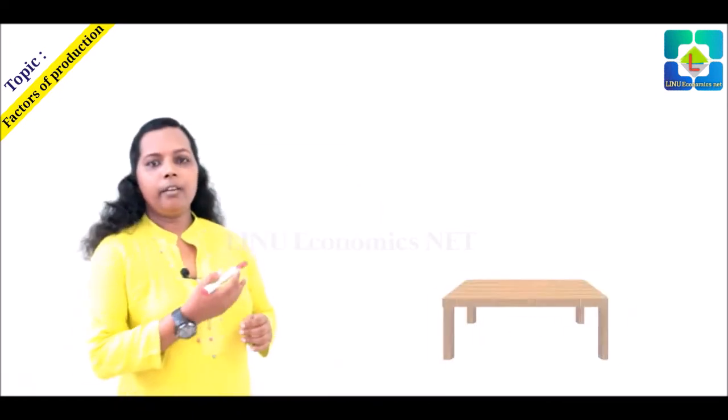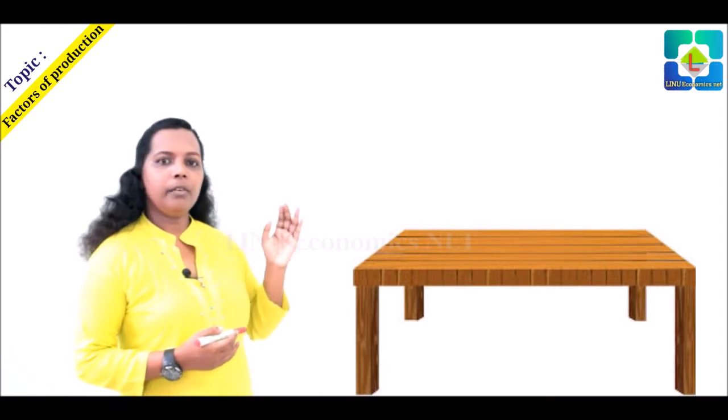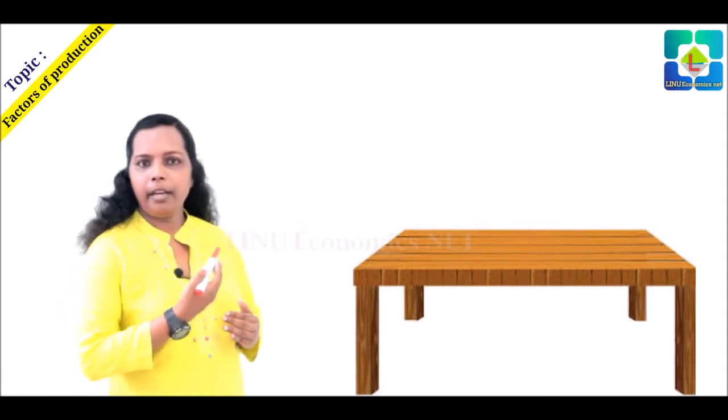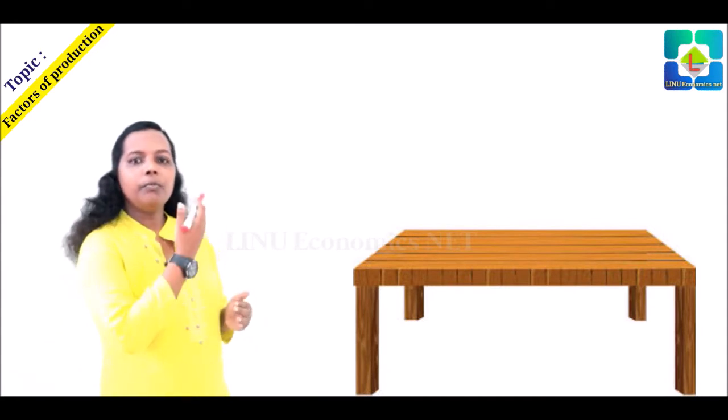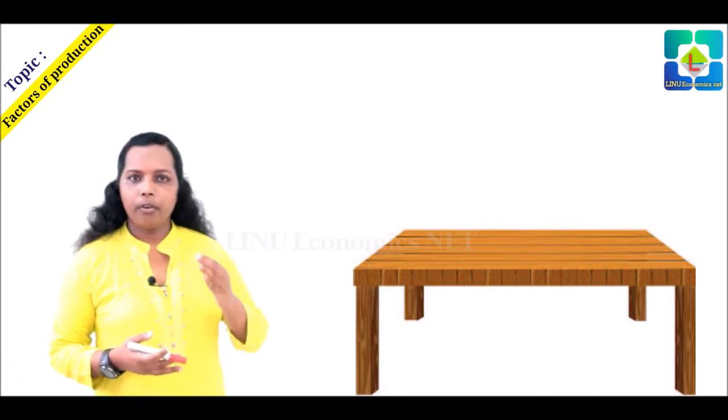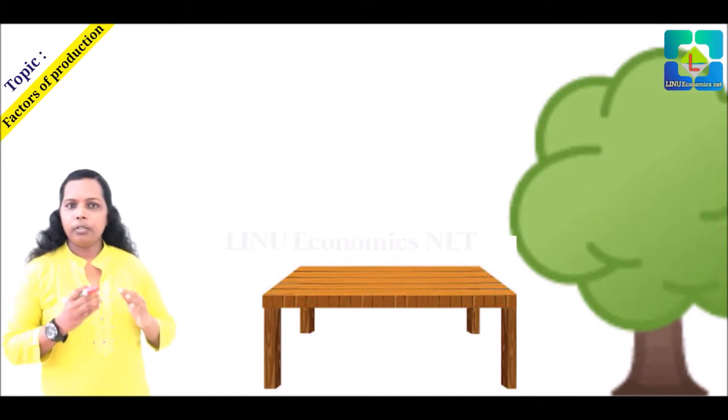We can see different types of goods and services around us. For example, in our house we can see televisions, fridge, tables, chairs. Let's take one example. Here is a wooden table. How is this wooden table made? We know that this wooden table is made up of wood. How can we get wood? Of course, it is from trees. The wood is a raw material to produce a wooden table.